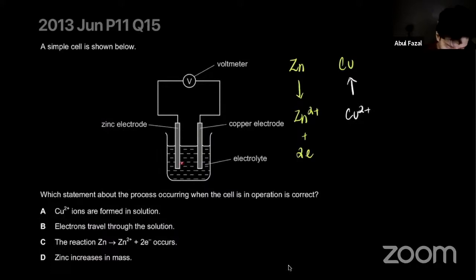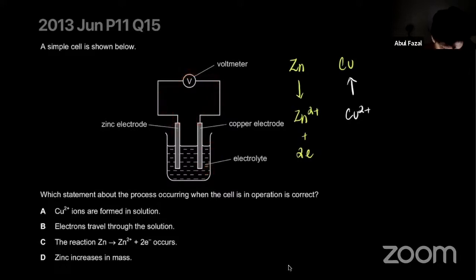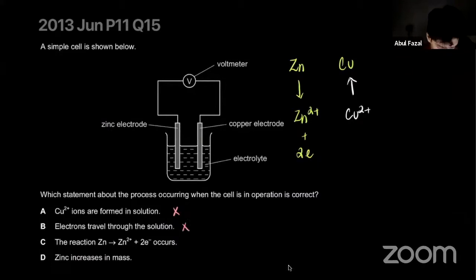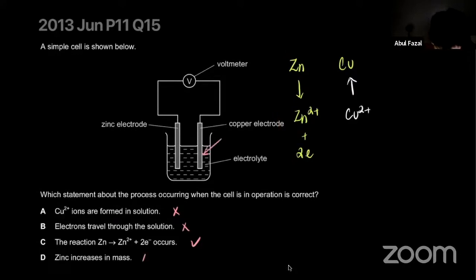Because if zinc is producing more electrons, all those electrons will cause copper ions to be deposited back as copper. So copper ions are not formed in the solution. Electrons do not travel through the solution — ions travel through the solution. Zinc actually decreases in mass, while copper will increase in mass. That's the correct answer.